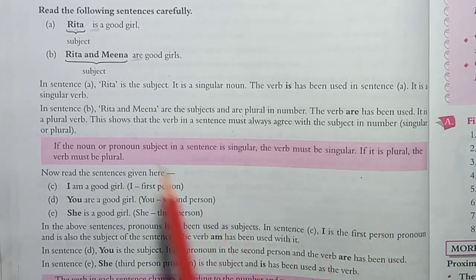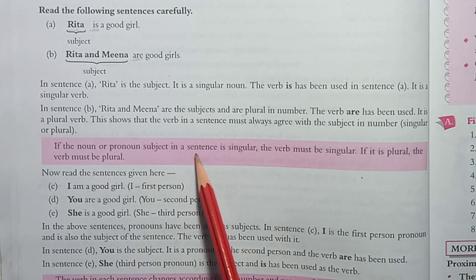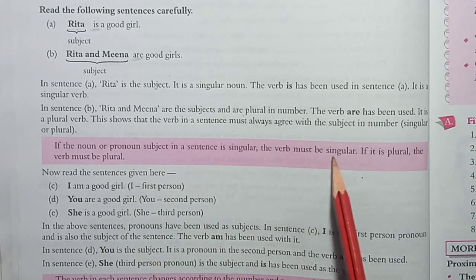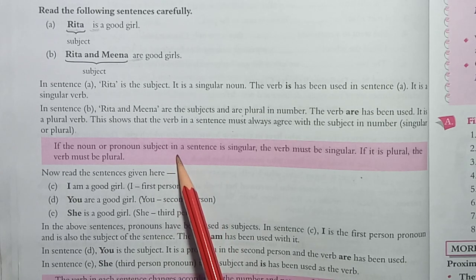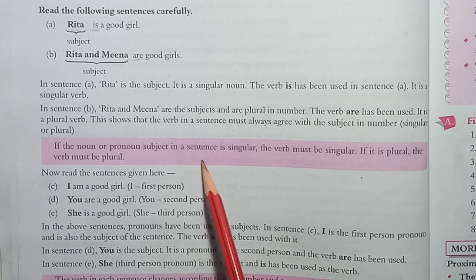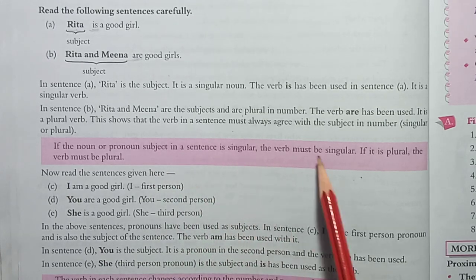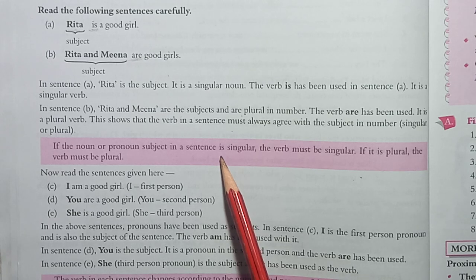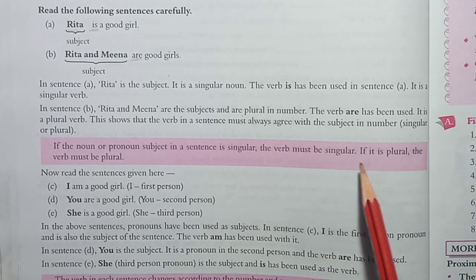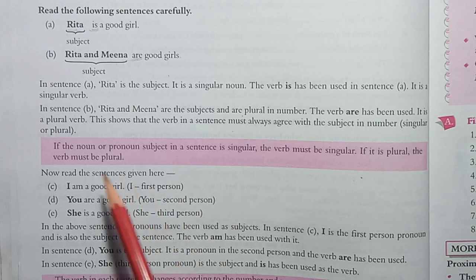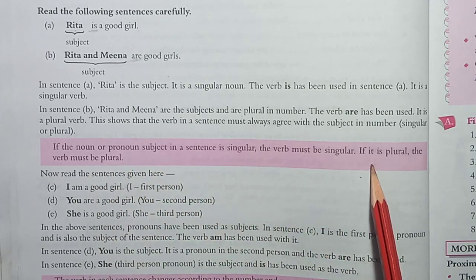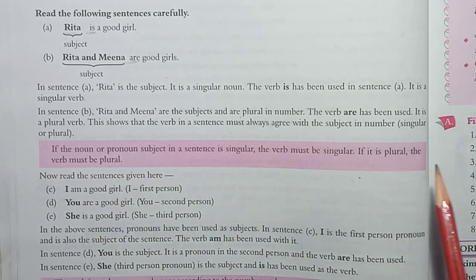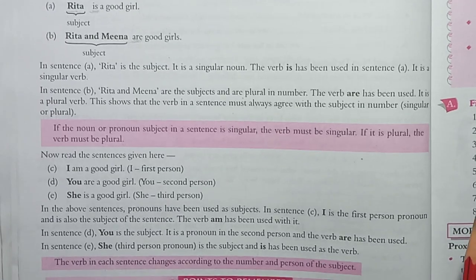Rule number one: if the noun or pronoun subject in a sentence is singular, the verb must be singular. If the noun or pronoun is plural, the verb must be plural. Singular subject takes singular verb; plural subject takes plural verb. This is your first rule.